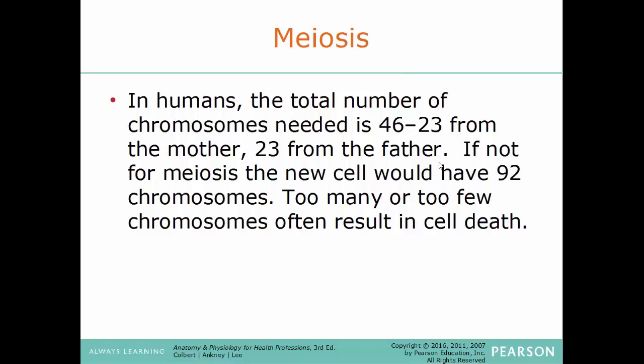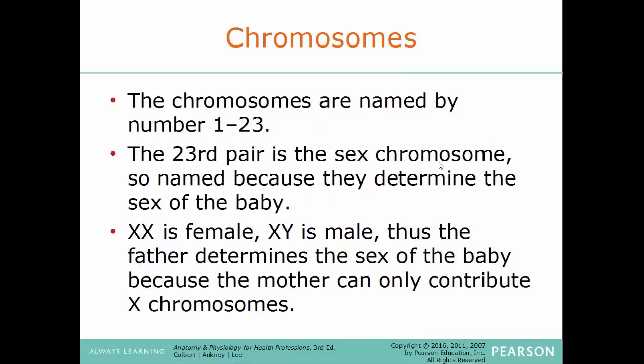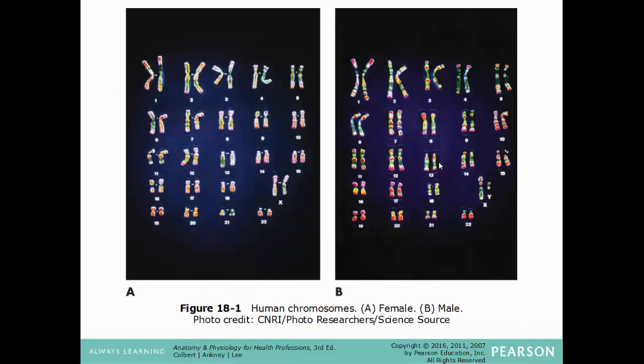If we don't have meiosis, the resulting fertilized egg would end up with 92 chromosomes — way too many to be viable. The number you're looking for is 46 chromosomes; anything higher or lower causes problems. The 46 chromosomes are always paired into 23 pairs, each consisting of one from your father and one from your mother. Chromosomes are matched based on size, shape, and the genes they carry, and are numbered 1 through 23. The first 22 pairs are somatic chromosomes. The last pair, number 23, are the sex chromosomes — XX is female, XY is male.